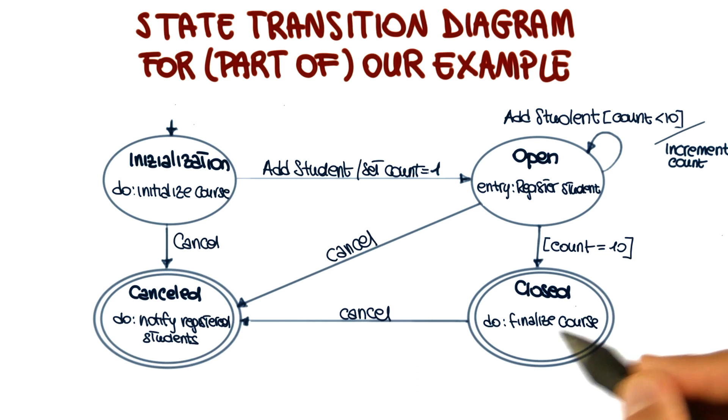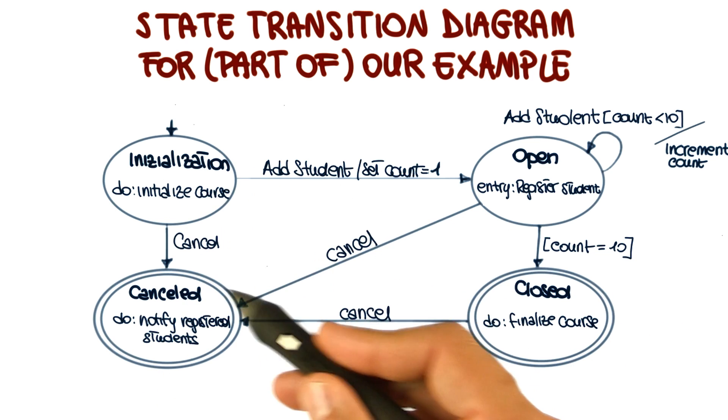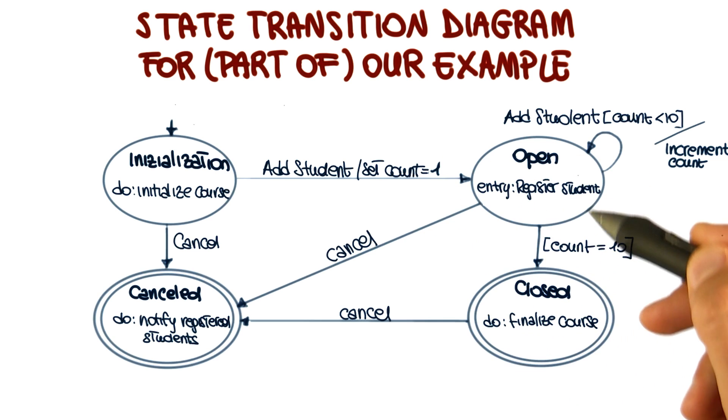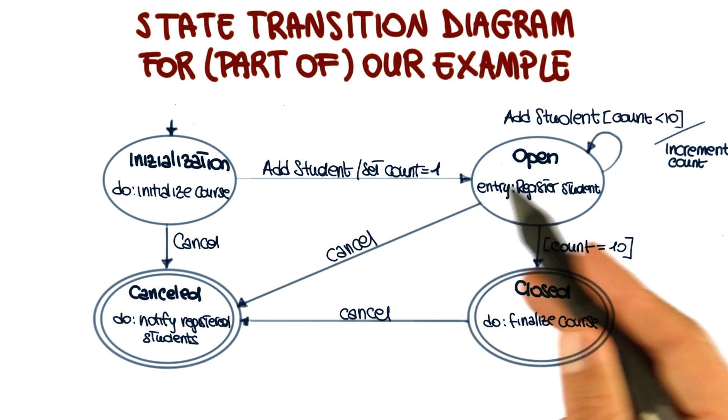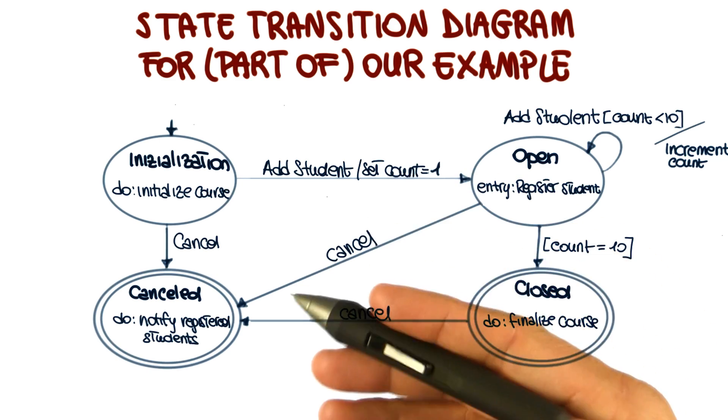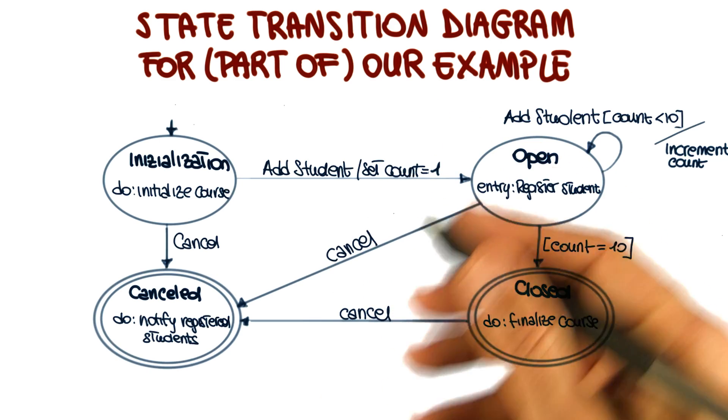So if we look at this state transition diagram, you can see that it's pretty easy to see what the evolution of objects of this class can be. How they can go from their initial state to various final states, depending on what are the external events that reach the system.